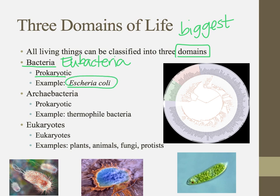We also have archaebacteria — also prokaryotes — like thermophiles. A lot of archaebacteria are special in that they can live in very hot or very salty environments; we call them extremophiles. And then we have all of the eukaryotes, which of course are eukaryotic: our plants, animals, fungi, and protists.